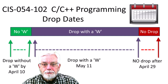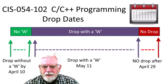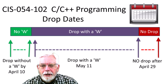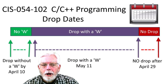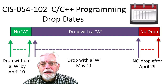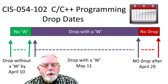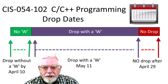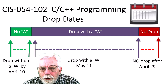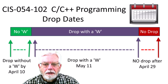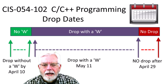The C/C++ Programming class is shorter in length than the Java Programming class and has different dates for dropping. If you need, you can drop the CIS 54-102 C/C++ Programming class by April 10, and nothing will show up on your transcript. If you drop by May 11, a W will show up on your transcript indicating that you signed up for the class and did not complete it. You are not able to drop the class after May 11.